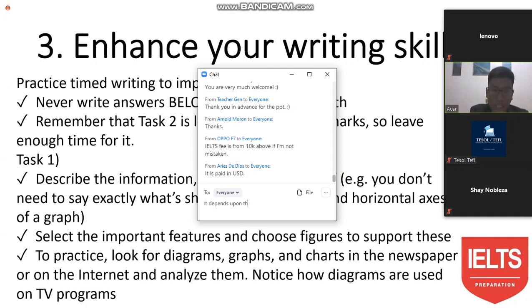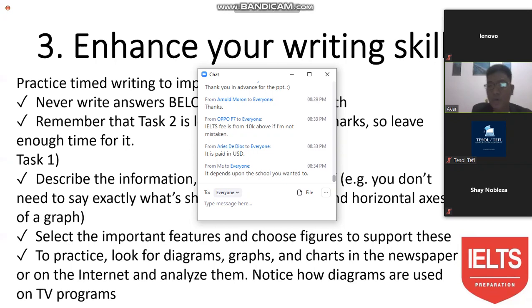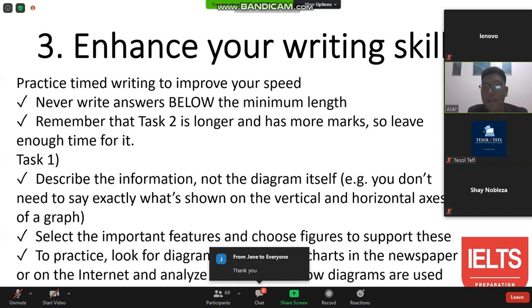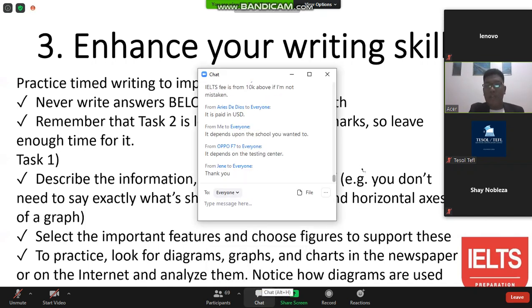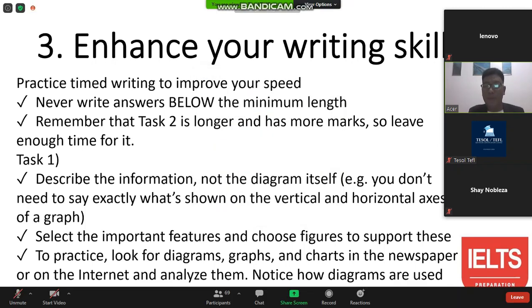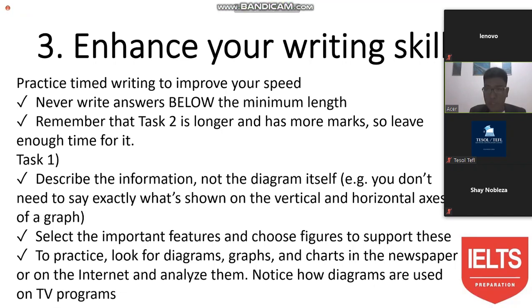Remember that Task 2 is longer and has more marks, so leave enough time for it. For Task 1, describe the information, not the diagram itself. For example, 'e.g.' stands for 'exempli gratia.' You don't need to say exactly what is shown on the vertical and horizontal axis of a graph. Describe the information — you will not simply narrate the direction of an arrow going up or down.